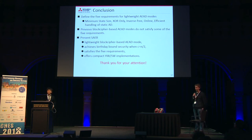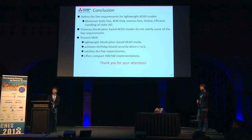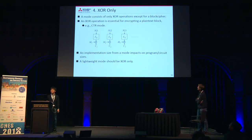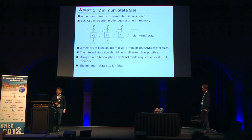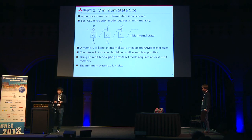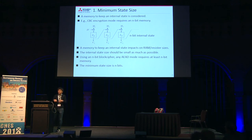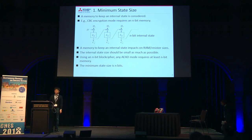We have time for one or two questions. You define five requirements, and there's one requirement you explicitly don't mention — parallelism — and your scheme doesn't satisfy it either. Can you comment on why you don't believe parallelism is a requirement? There are schemes like counter mode where you can run the block cipher in parallel for longer messages. Our target is lightweight devices. In such devices, parallel implementation seems to be difficult, so we don't consider parallel implementation.